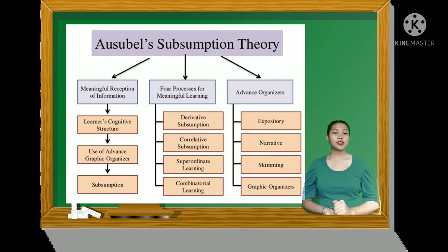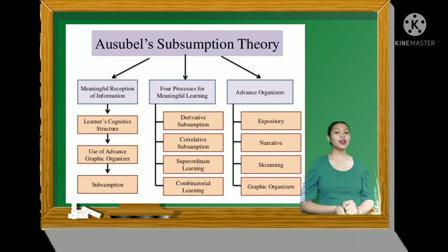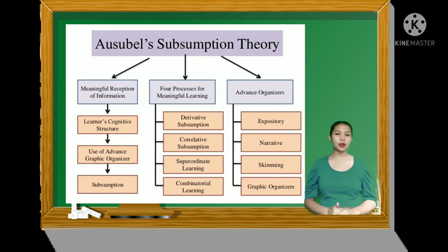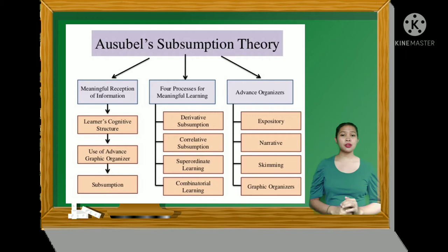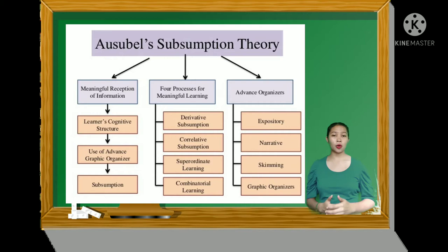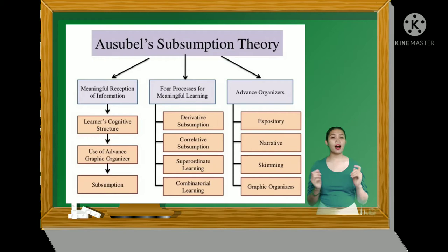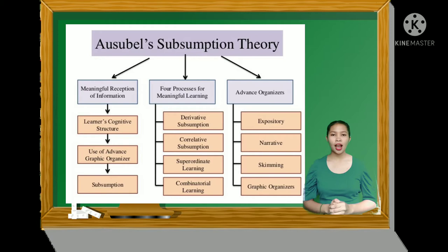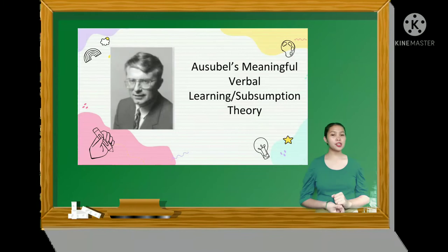This Ausubel Theory is concerned with how individuals learn a large amount of meaningful material from verbal or textual presentations in a school setting. The Subsumption Theory suggests that our mind has a way to subsume information in a hierarchical or categorical manner if the information is linked or incorporated with prior knowledge or familiar patterns. This learning is based on presentational, superordinate, and combinatorial processes that occur during the reception of information. This theory emphasizes the importance of structure and connecting new information to prior knowledge.